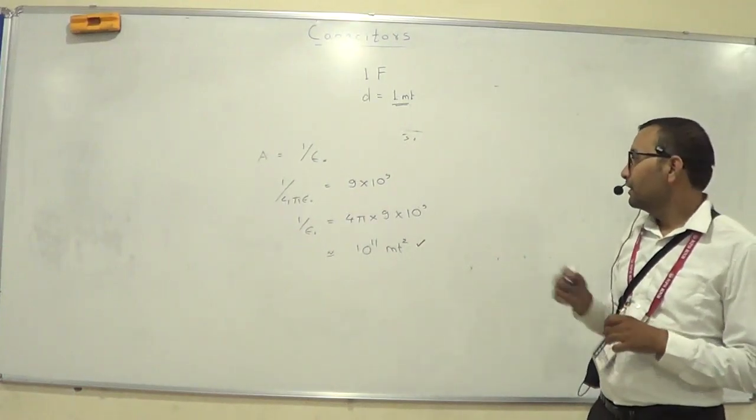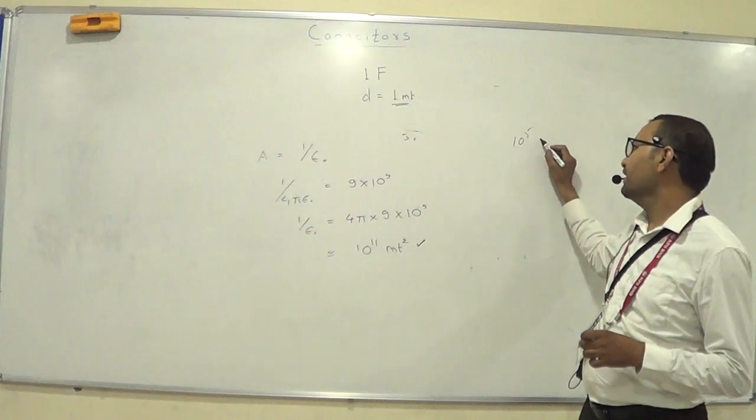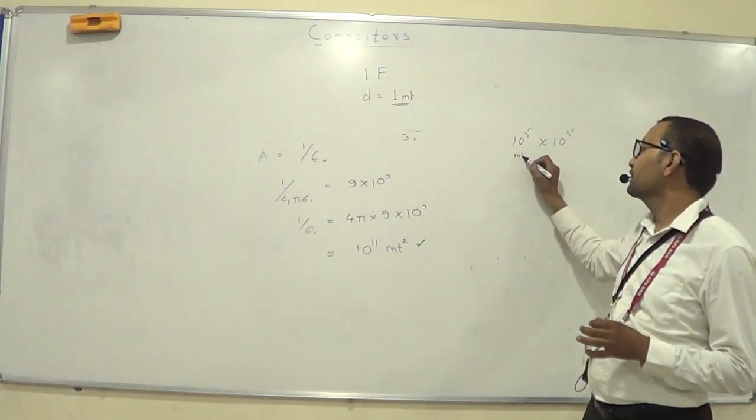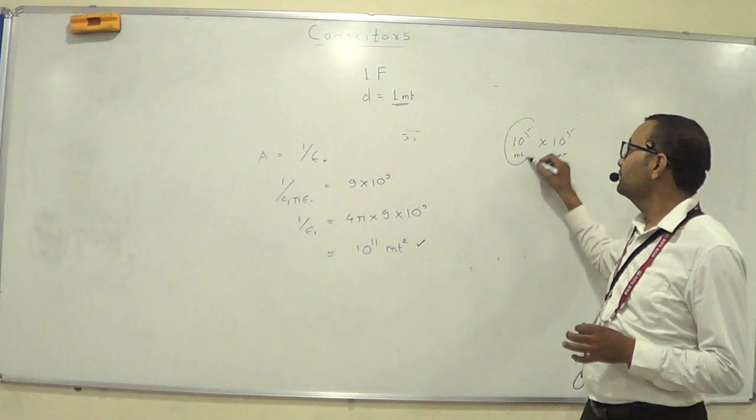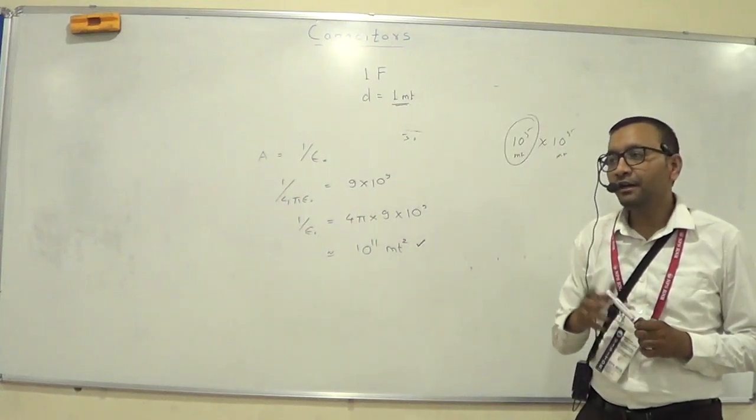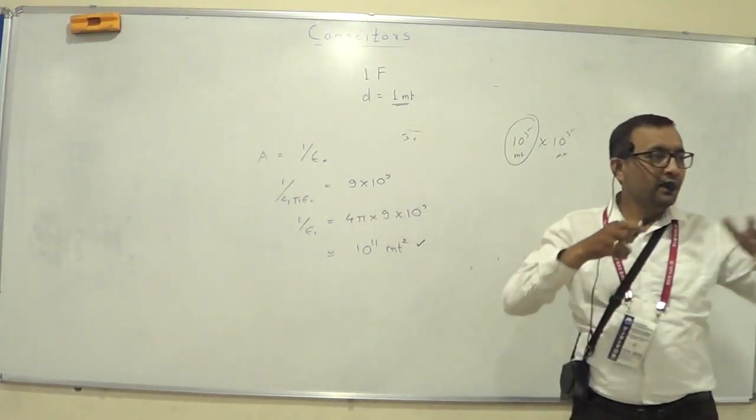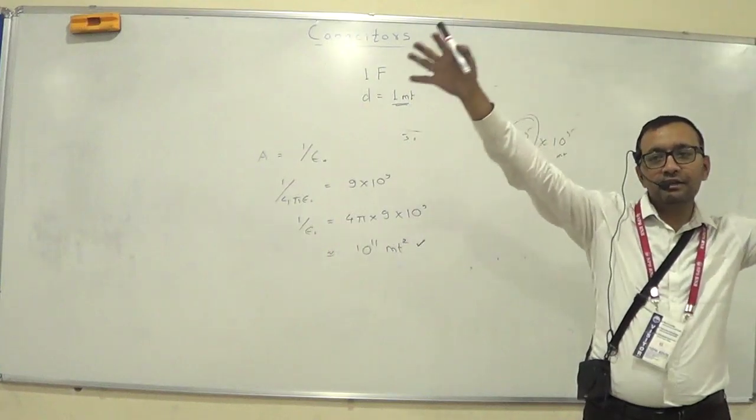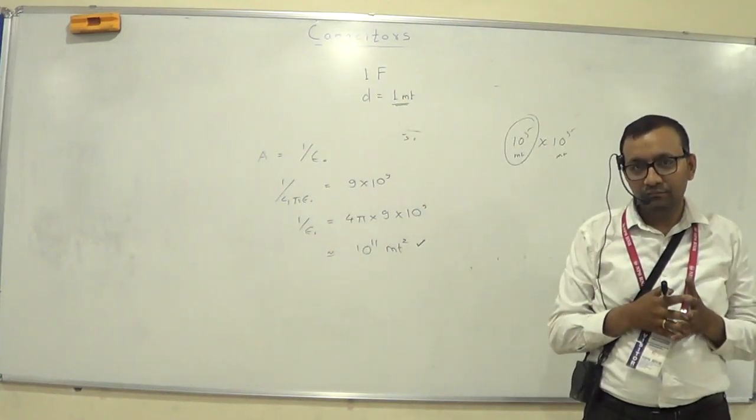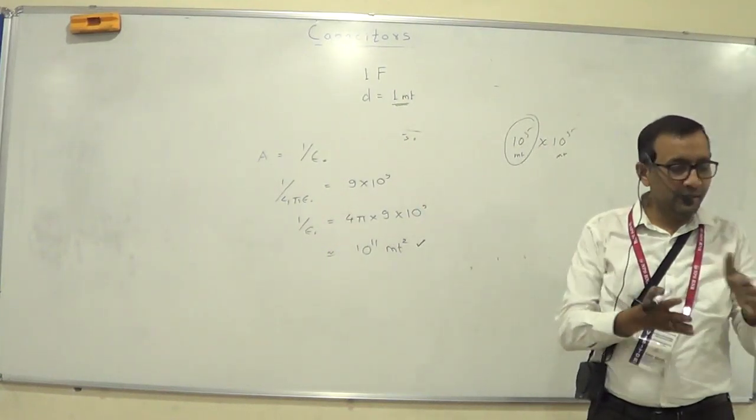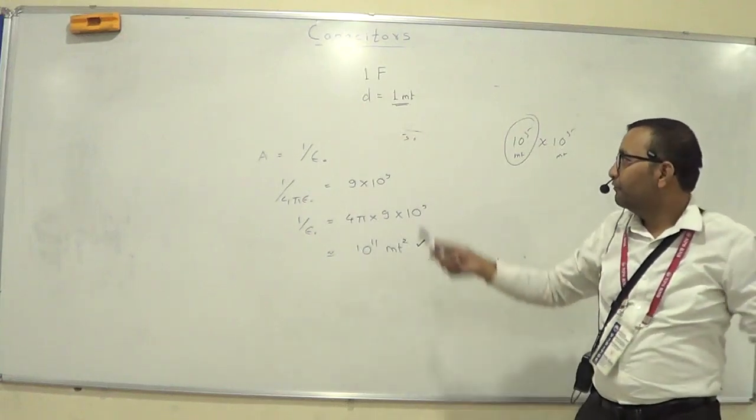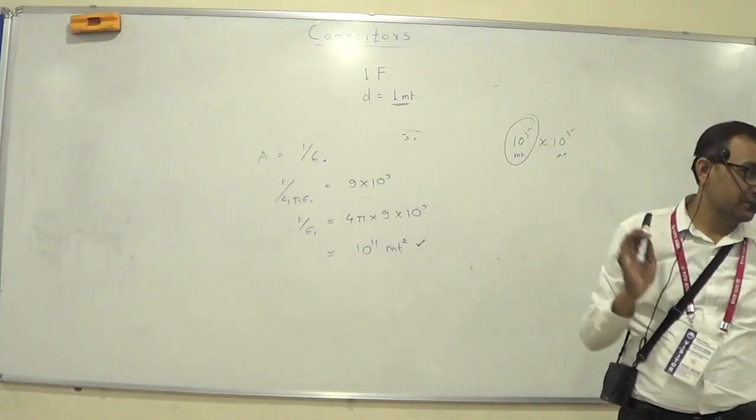It is like, you know, roughly 10 to the 5 into 10 to the 5 meters square. What is 10 to the 5 meter? It is like 100 kilometer. So 100 kilometer wide square plate, 2 of that separated by 1 meter will have 1 farad of capacitance.